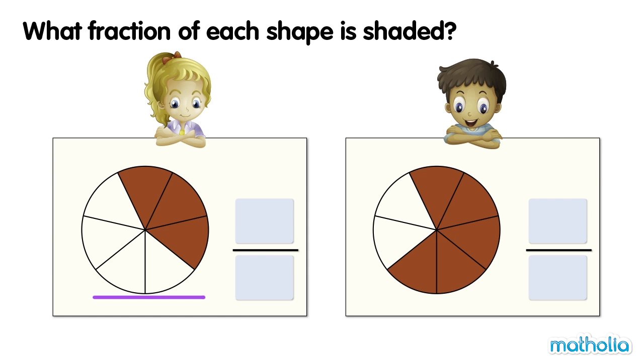This circle is divided into seven equal parts. Three of the parts are shaded.